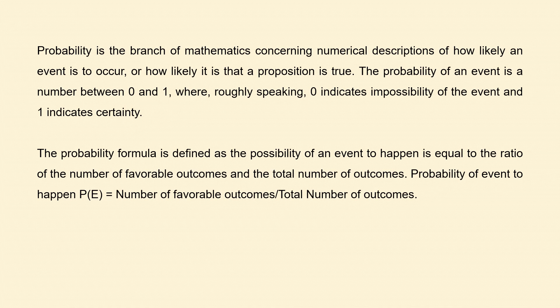The probability formula is defined as the ratio of the number of favorable outcomes to the total number of outcomes. For example, in tossing a coin, the outcome may be either head or tail — two outcomes — so the probability of getting a head is 1 by 2. In throwing a die, there are 6 outcomes: 1, 2, 3, 4, 5, 6. The probability of getting any particular number is 1 by 6.